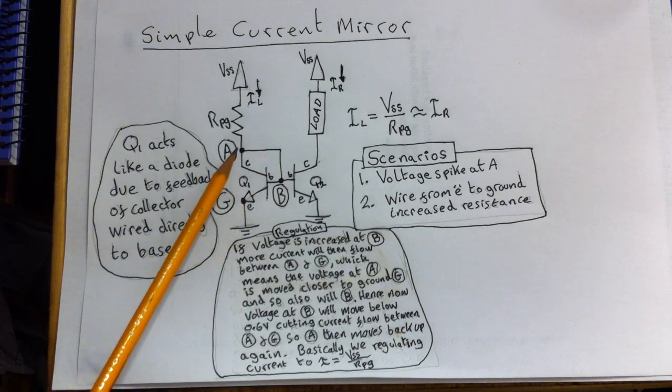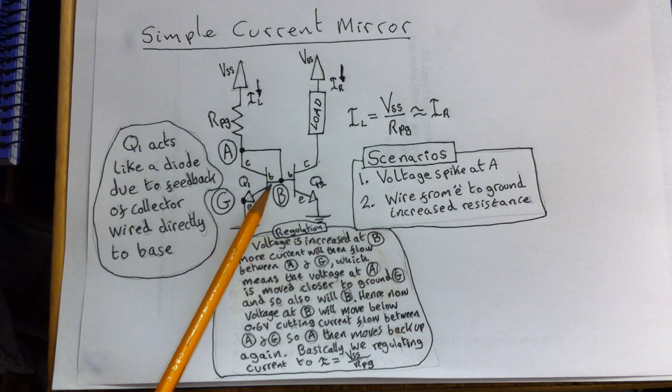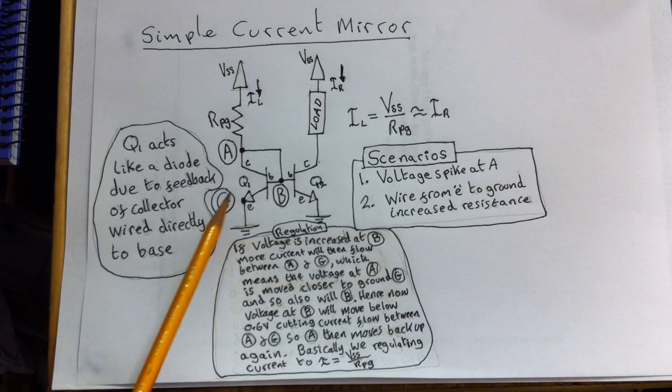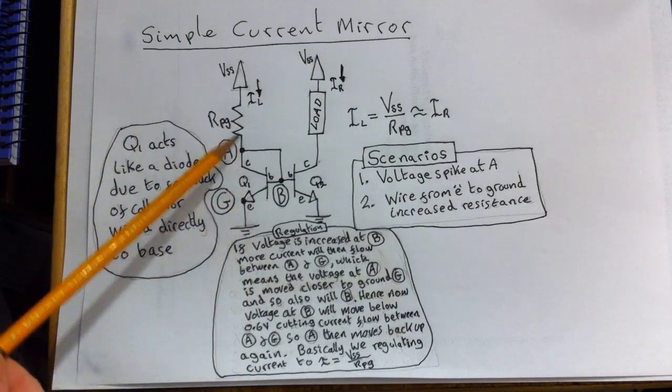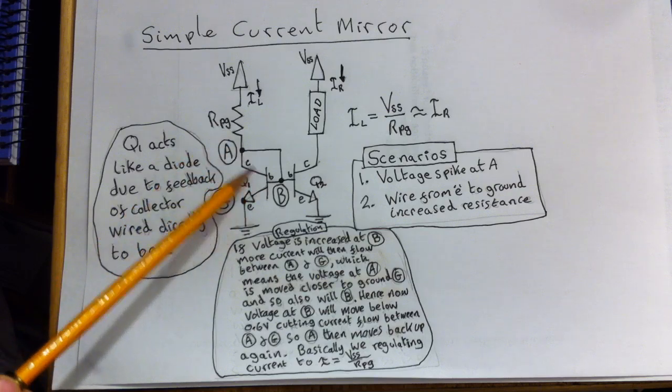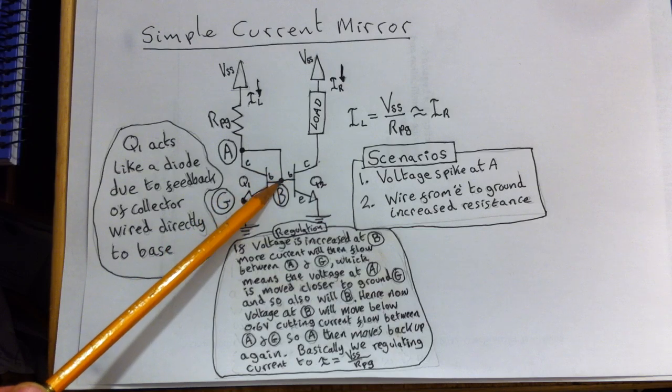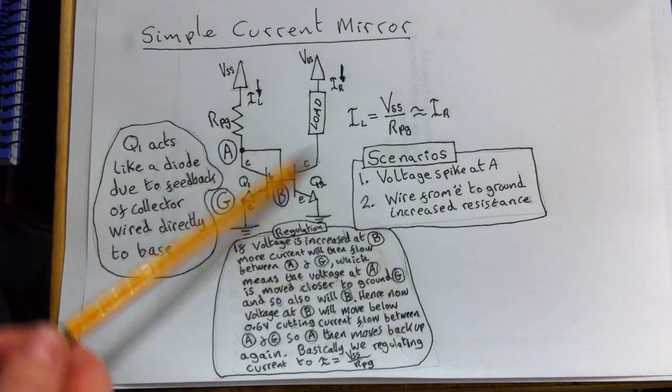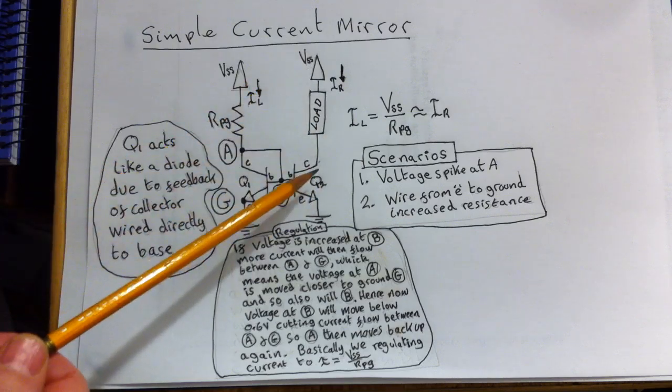What's happening here is that because we've connected point A to point B, we've effectively shorted this part of the circuit. So all we've got is a PN junction diode between the base of Q1 and the end of the emitter here. So you might say, well, why not just use a diode instead of a transistor? Well, if we used a diode, we wouldn't actually have the secondary effect, which is that this base is also connected to the second transistor Q2. If we just use a diode, we wouldn't be able to connect the circuit to this right-hand side of the diagram here.